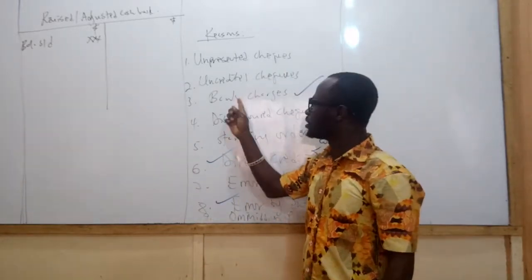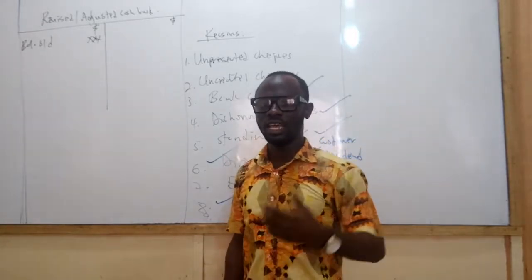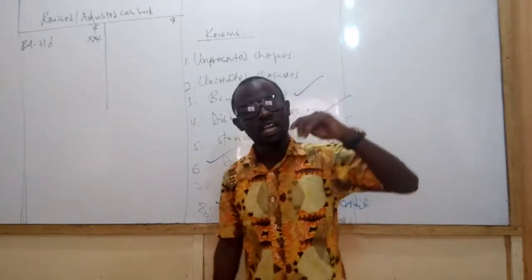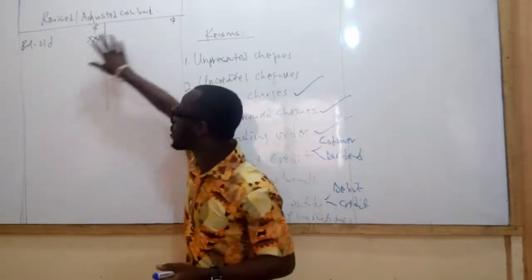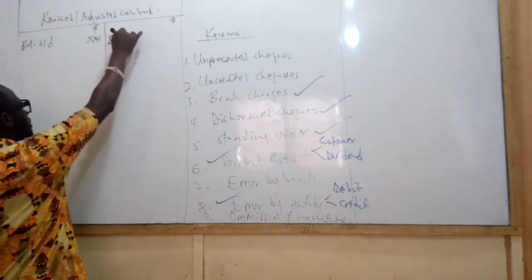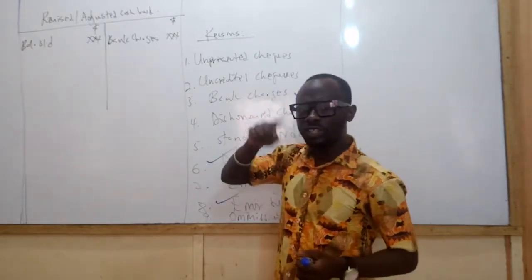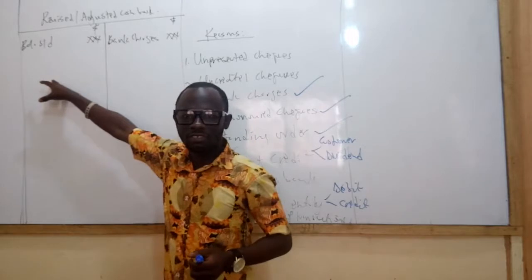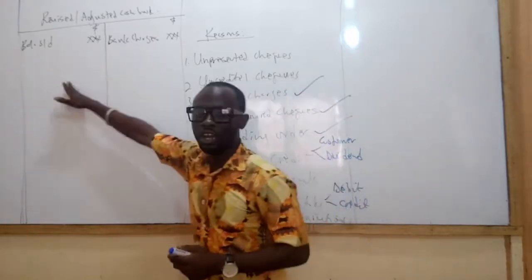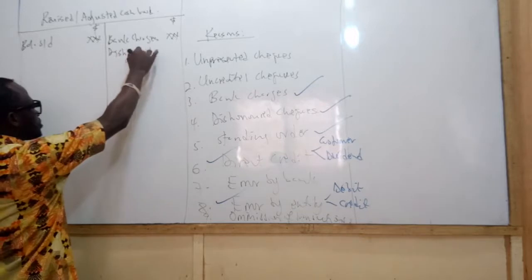When you look at the bank statement, items like bank charges will be on the debit side because the bank deducts that money from your account. So bank charges must be entered on the credit side of our revised cash book, as it is a payment being made. Dishonoured checks, which we originally debited, must now be credited in the revised cash book to cancel that earlier debit.